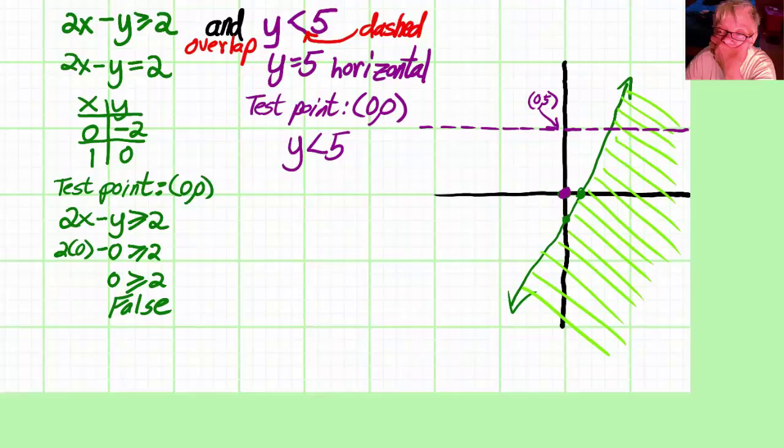I rewrite the inequality: y is less than 5. And I put the y coordinate of my test point in for the y. Notice I did exactly the same things over on the left. I get y is less than 5, which is true.